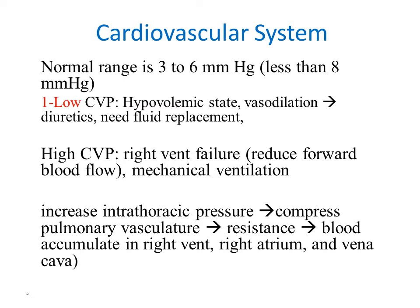The normal range for central venous pressure is three to six centimeters of water, less than eight. Low central venous pressure may indicate hypovolemia, vasodilation, or decreased fluid replacement. High central venous pressure may indicate hypervolemia — a large amount of fluid inside the vascular space.